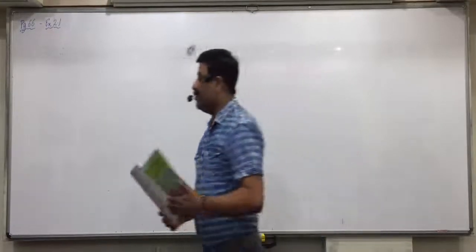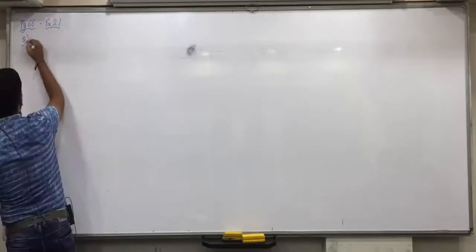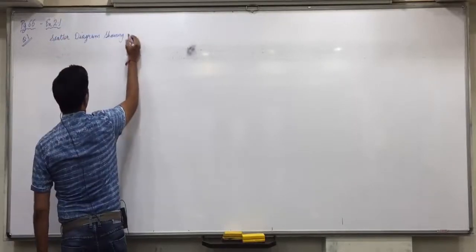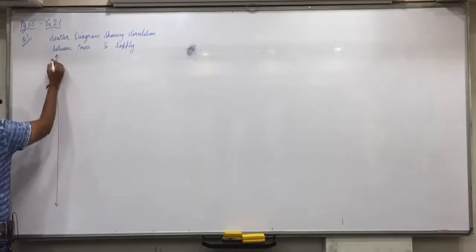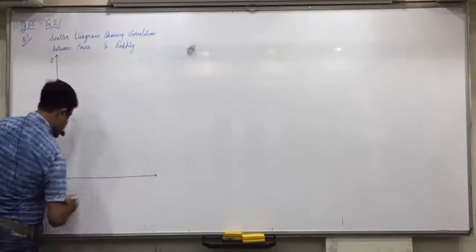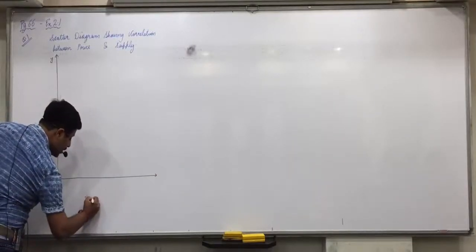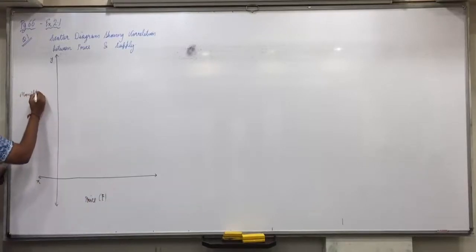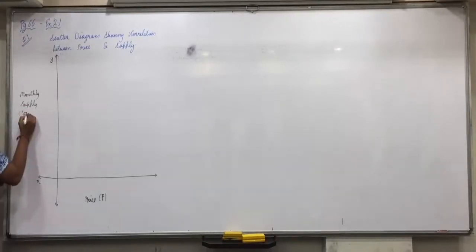Give the heading: 'Scatter diagram showing correlation between price and supply.' On the X-axis we will show price in rupees. On the Y-axis we will show monthly supply in 1000 units.